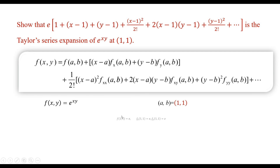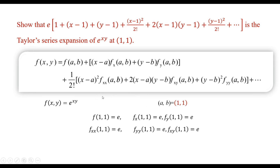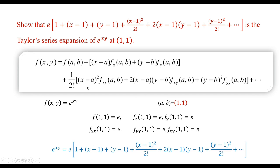We need to find f(1, 1), the first-order partial derivative with respect to x at (1, 1), the first-order partial derivative with respect to y at (1, 1), the second-order partial derivatives with respect to x twice, y twice, and the mixed partial derivative — all at (1, 1). Substituting these values into the formula, we get e^(xy) = e·[1 + (x−1) + (y−1) + (x−1)²/2! + …] and so on.